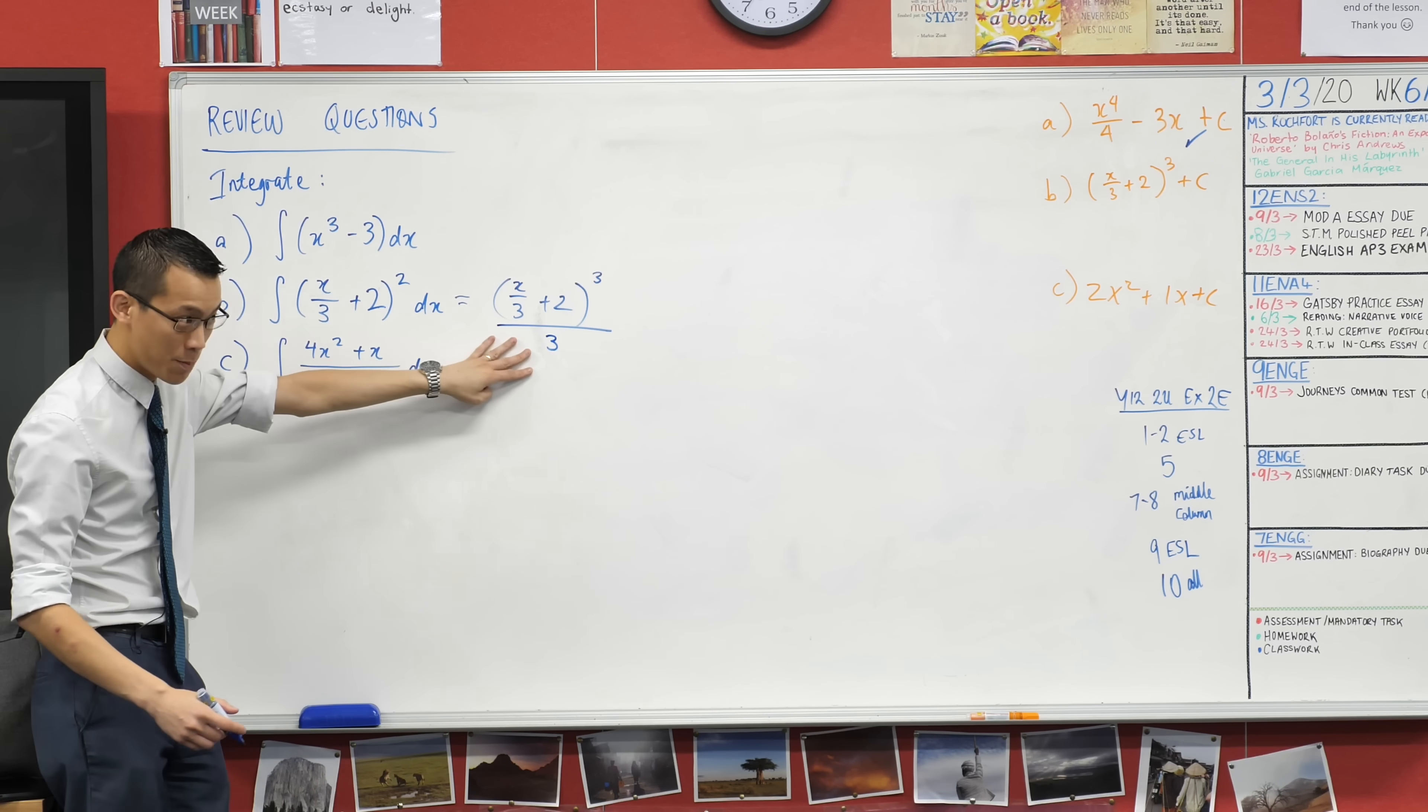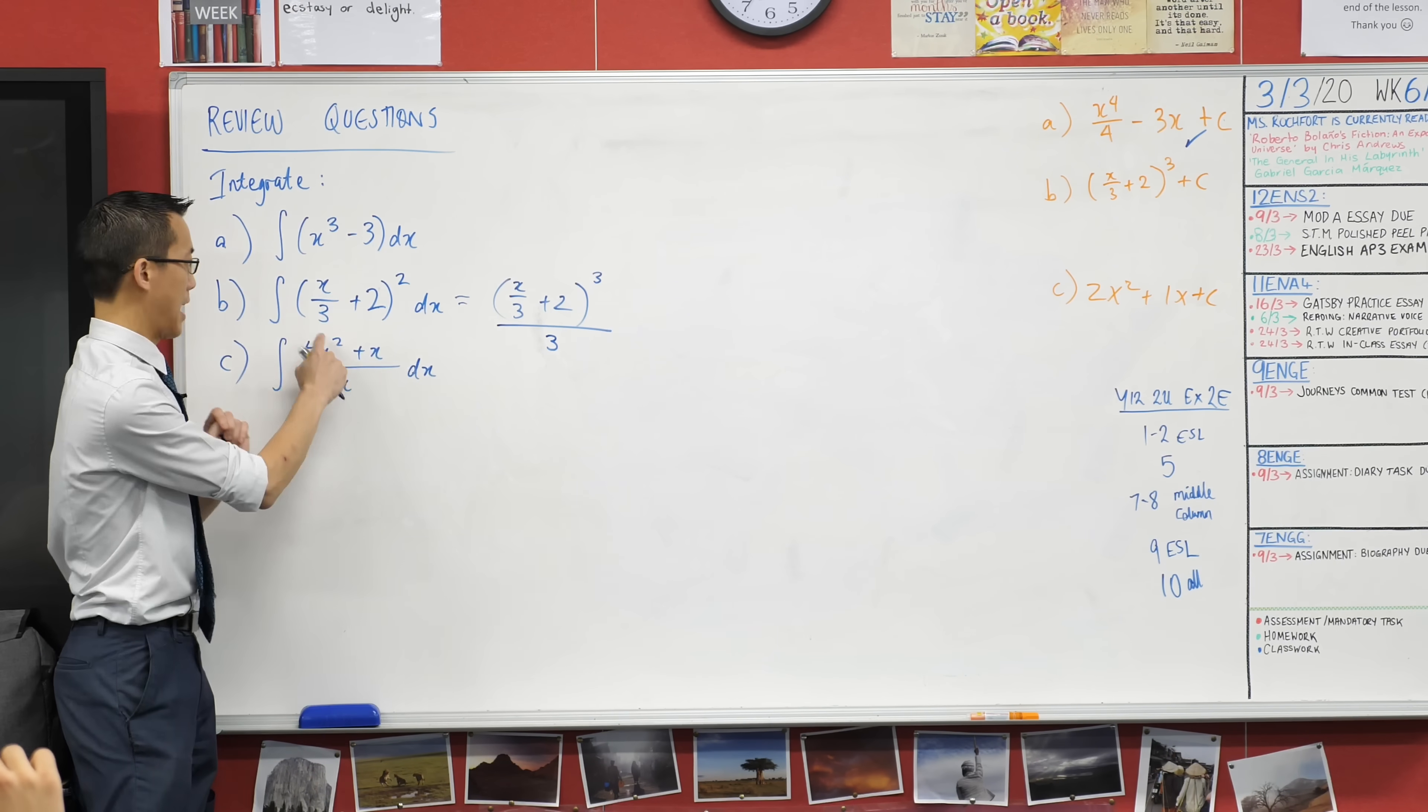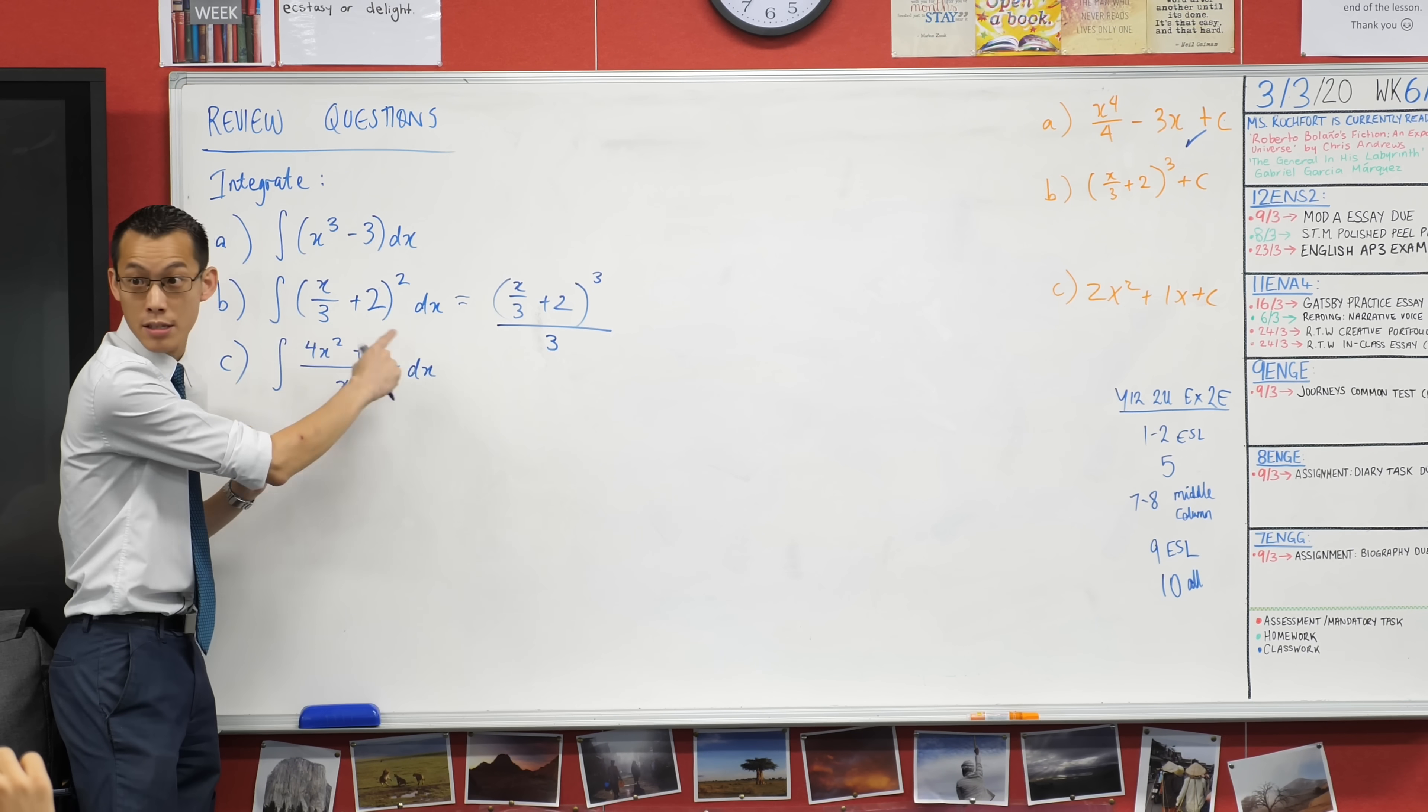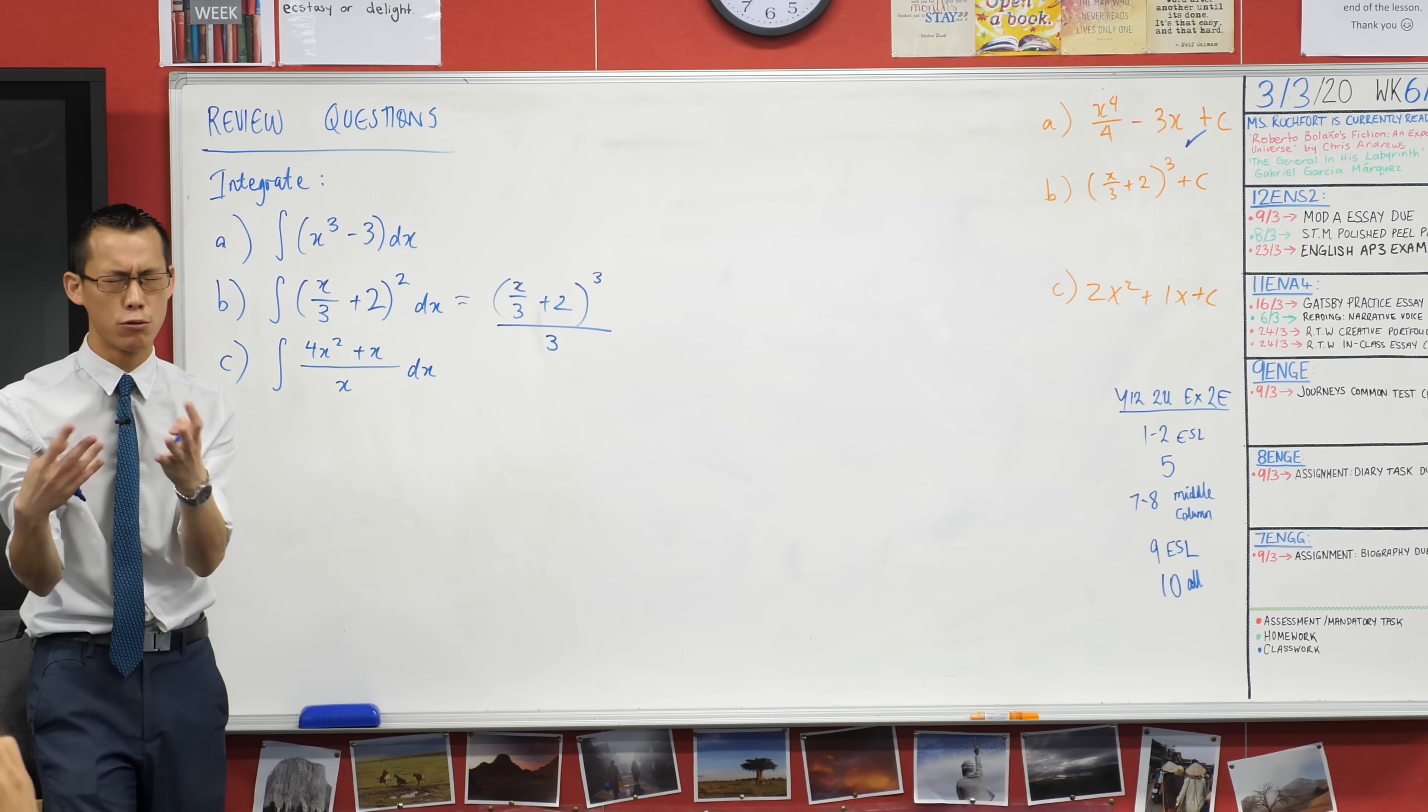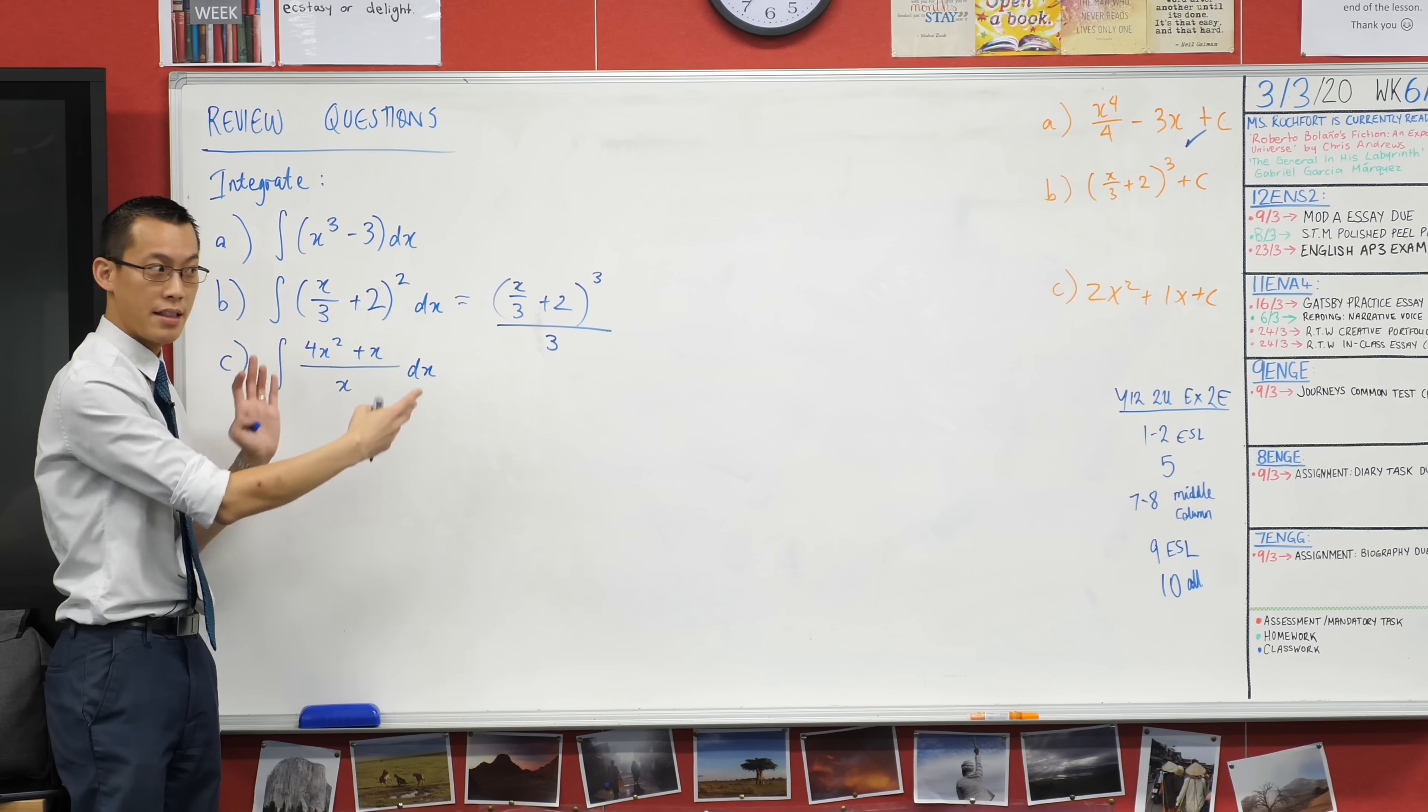Now at this point here, I've taken care of the outside, the squared bit, but I haven't taken care of the inside. The chain function - chain rule rather - does the inside and the outside. Reverse chain rule also has to do the inside and the outside.